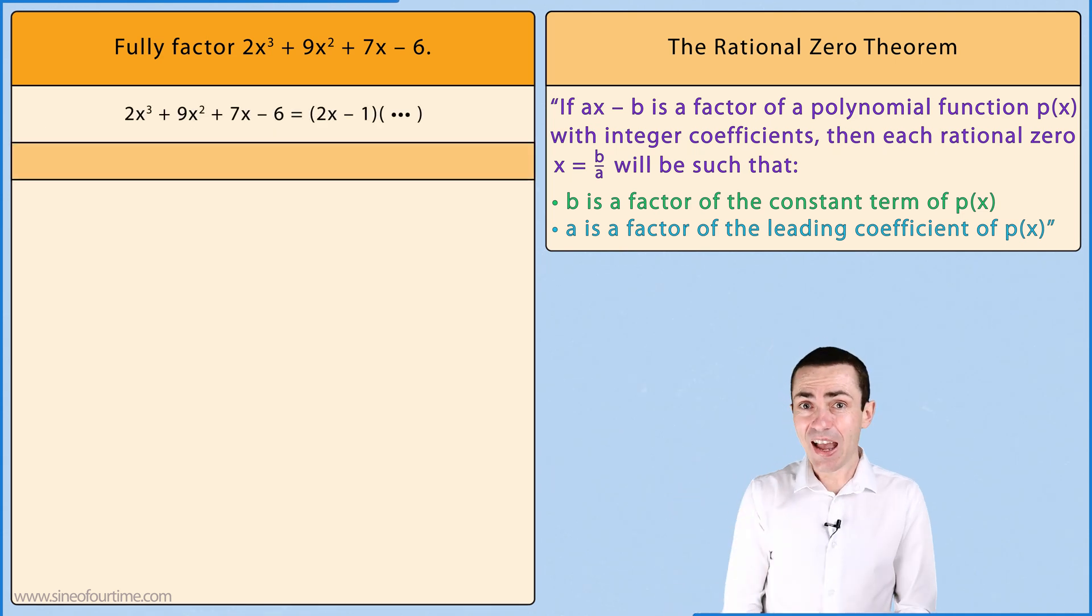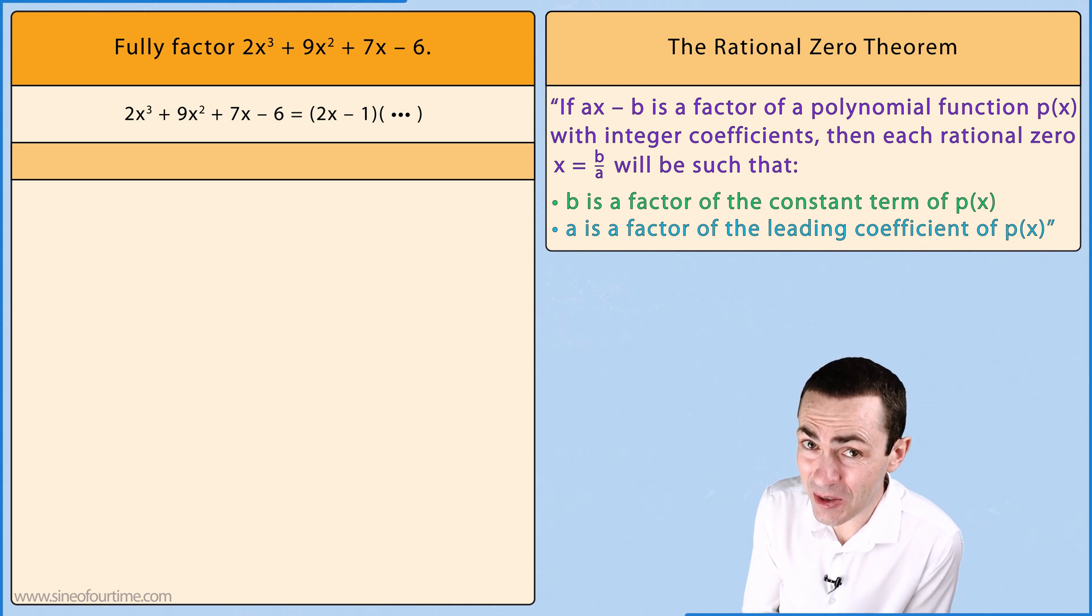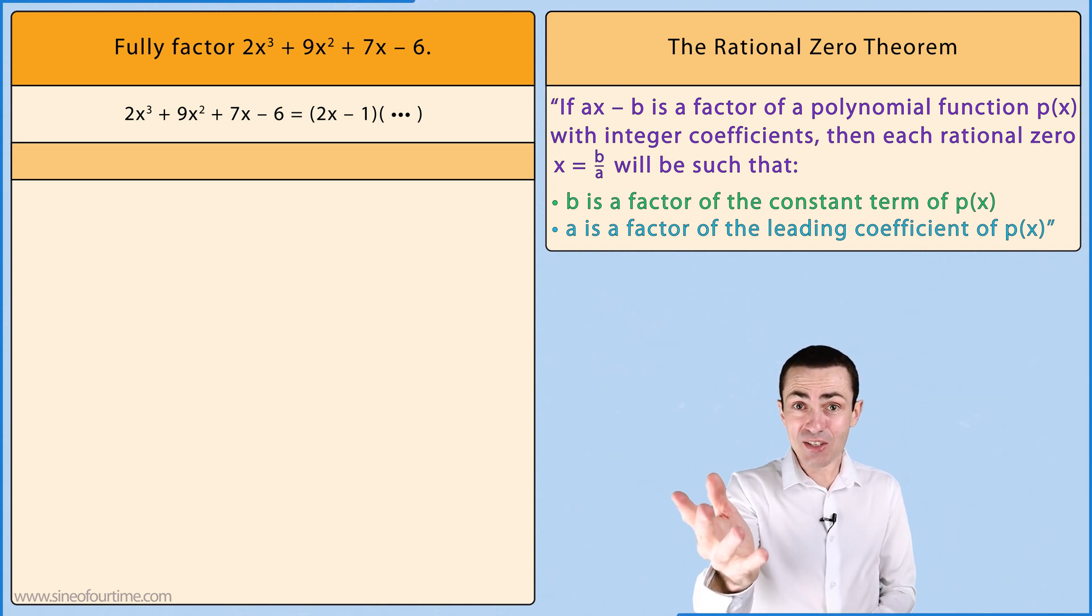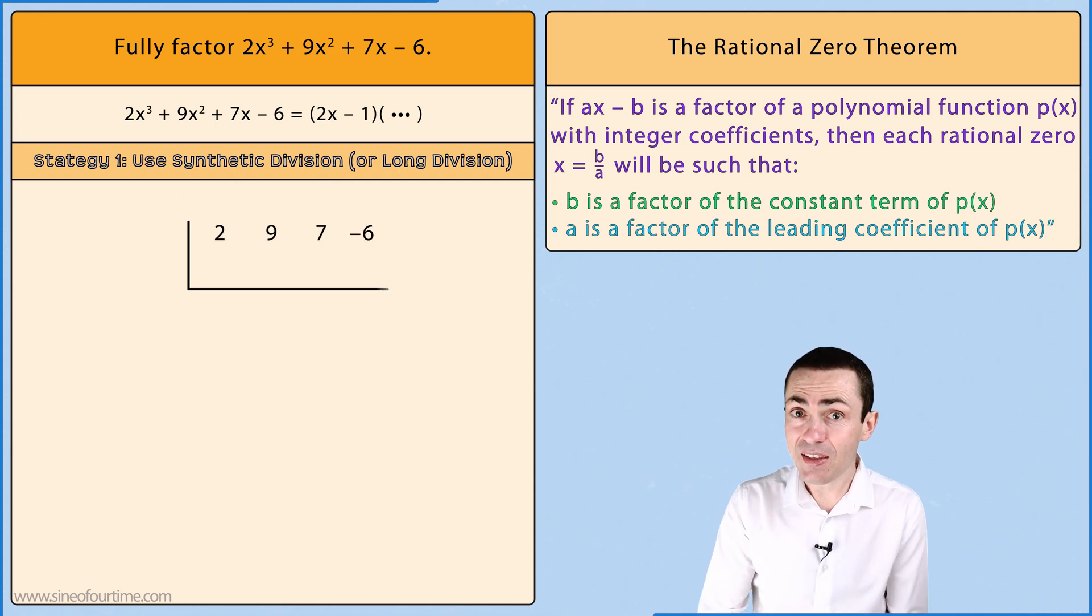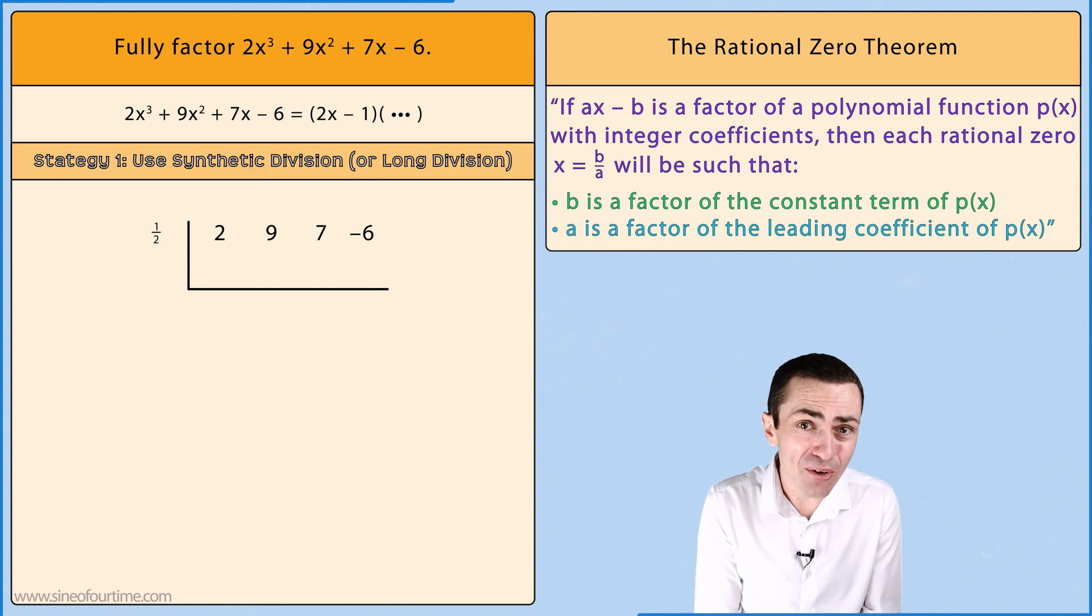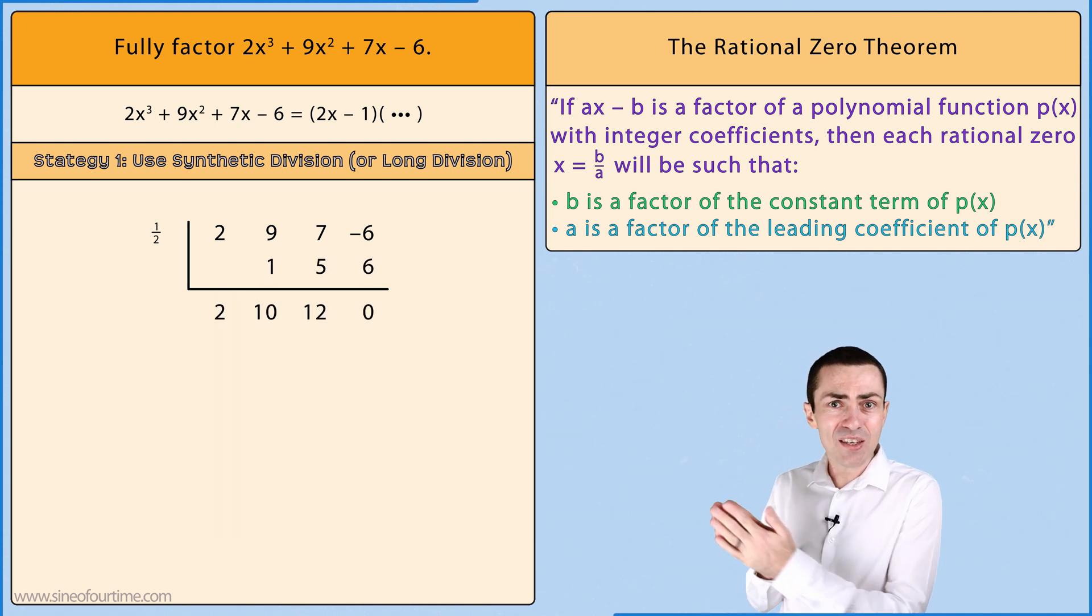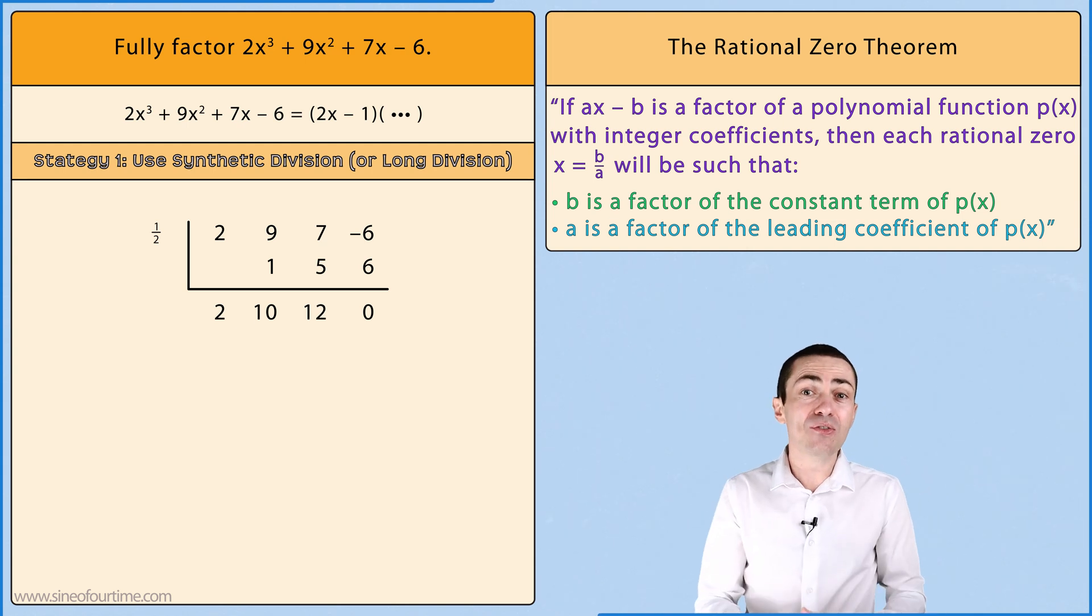The first strategy and the one that I very highly recommend is to use synthetic division or even long division where we can take the polynomial and divide by the first factor that we have just discovered. But please be very careful when using synthetic division with divisors of the form ax plus or minus b. Here we need to take the 2 and the 10 and the 12 and divide those values by 2 in order to get the coefficients of the quotient.